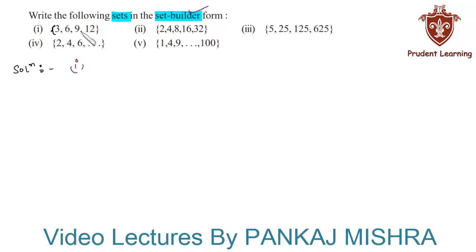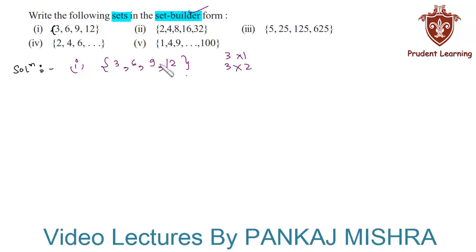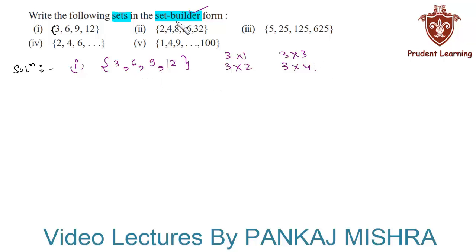In our first section, the given set is {3, 6, 9, 12}. Here we can write 3 as 3×1, 6 as 3×2, 9 as 3×3, and 12 as 3×4. So you can see that the elements given in the set are the first 4 multiples of 3.